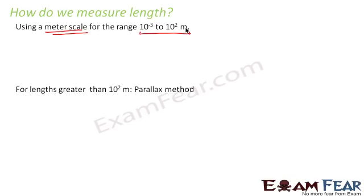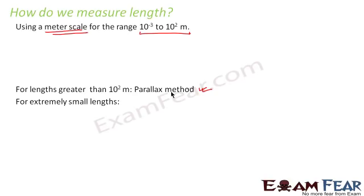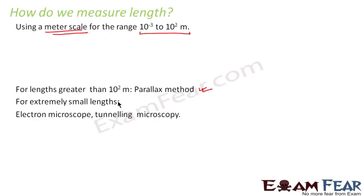For lengths which are outside this range — that means for lengths greater than 10 to the power 2 meters — we use a method called the parallax method. We will discuss this in detail. For very huge lengths, we use the parallax method. Similarly, for extremely small lengths, that is below the range of 10 to the power minus 3, we use methods like electron microscopy or tunneling microscopy.